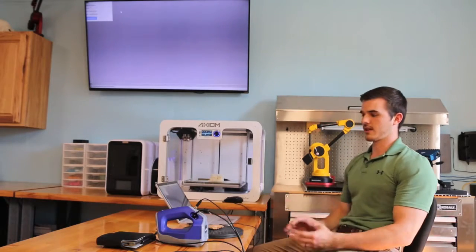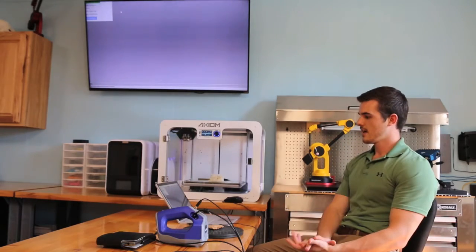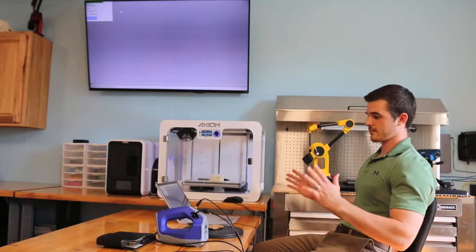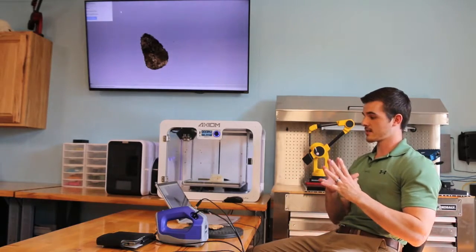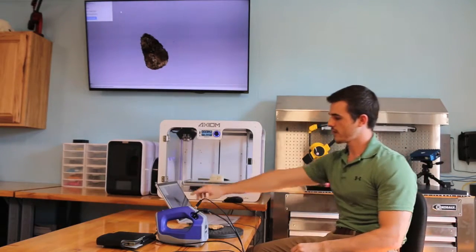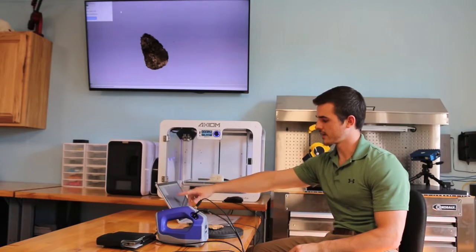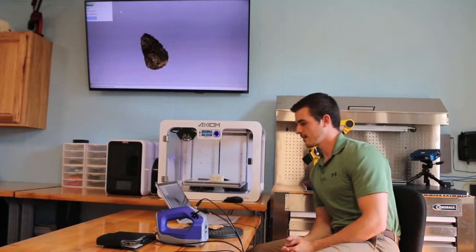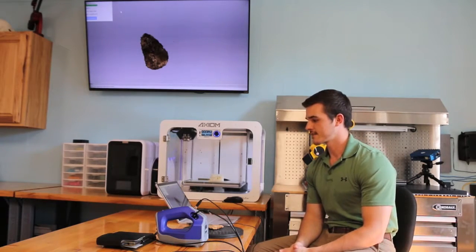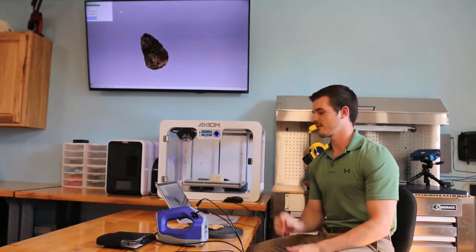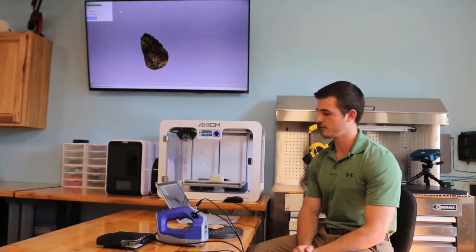The fine registration is just aligning the individual scans. The global registration is aligning the scans as a whole. Outlier removal, like I spoke about earlier, is gathering any noise that is outside of the model itself and will be removed. And then the fusion, obviously more alignment. And this small object filter is just your fine tuning on the outlier removal.